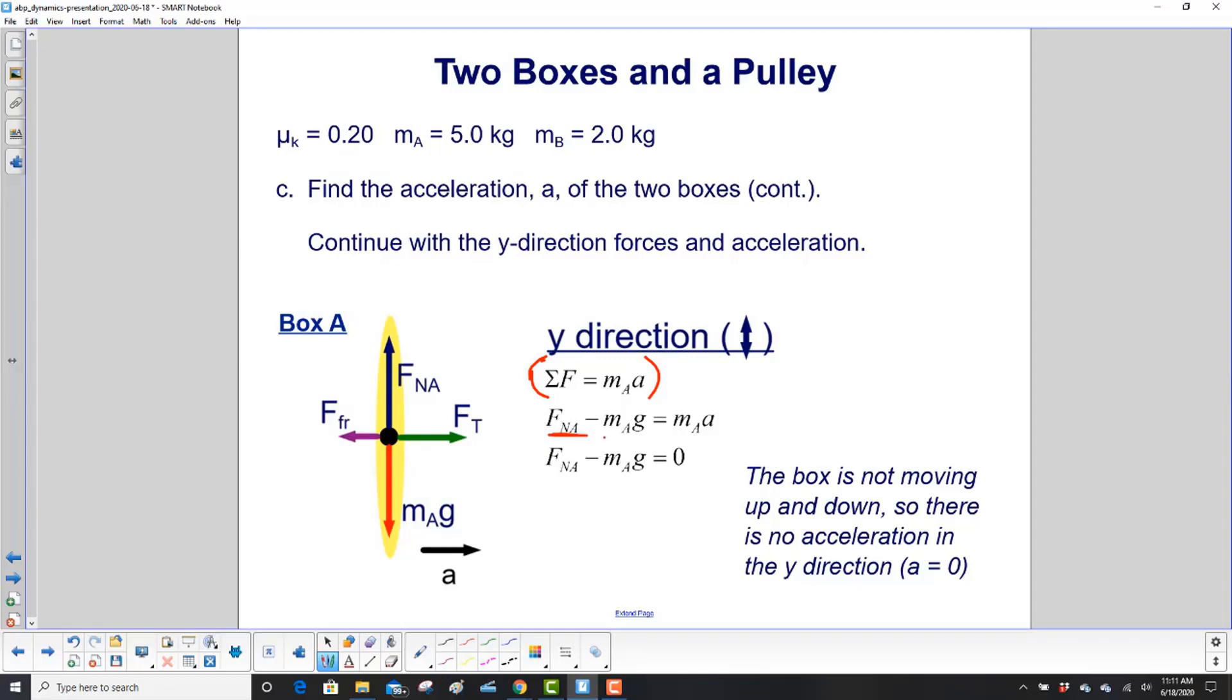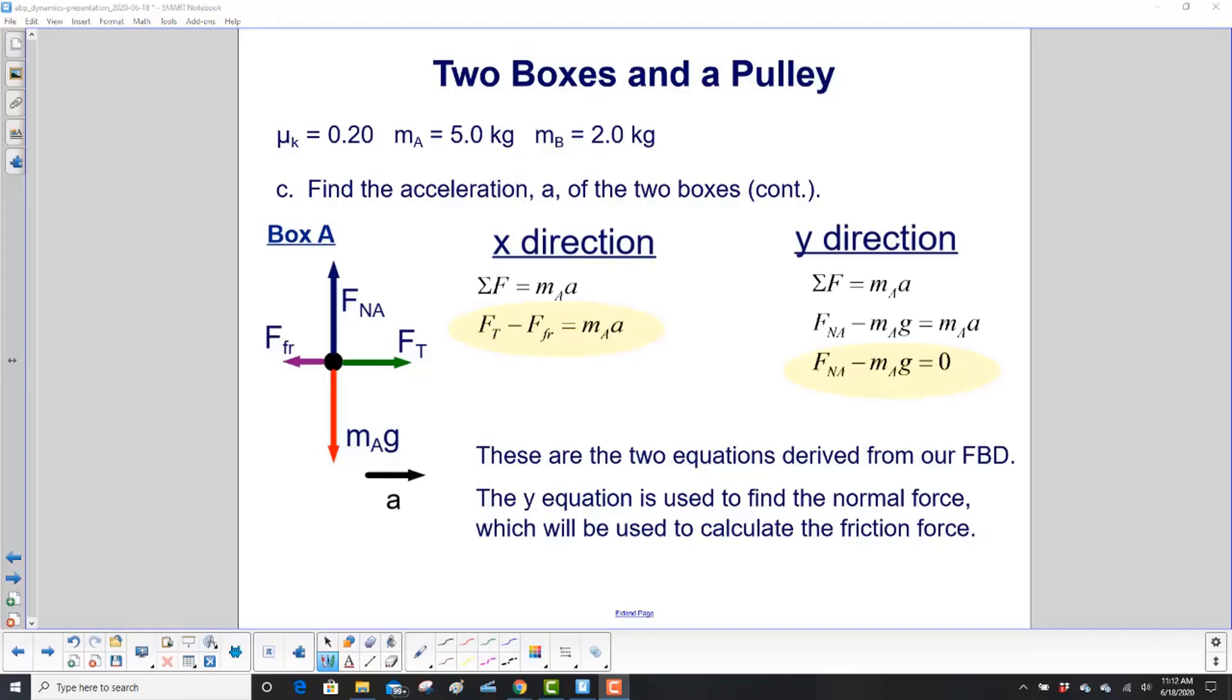Gravitational force is down, so it's negative. Our acceleration is zero. The box is not moving up and down, so there is no acceleration in the y direction. And we're going to need that this time, because we have to calculate the friction force. So we need the normal force.